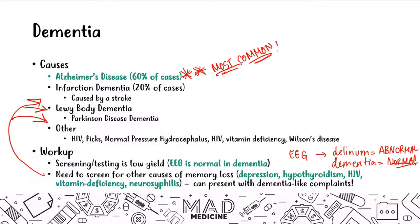You also need to rule out one important thing, which is depression. A lot of times patients who are depressed may present like they have dementia, but it is just a side effect of being depressed. They may forget people around them or forget to do tasks — not because they can't, but because they're not motivated, they feel really down, and they don't have the ability to do it at that moment.